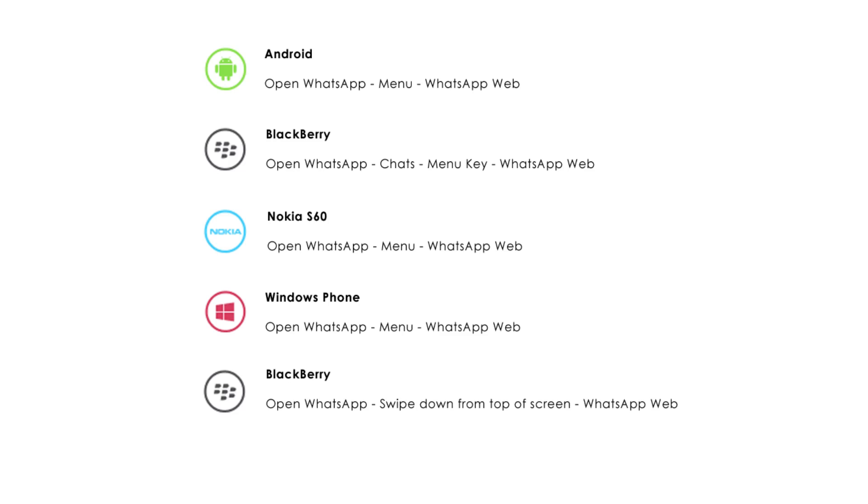Here are the instructions to get the web client on different mobile platforms. You have now paired WhatsApp on your phone with a WhatsApp web client. Your phone needs to stay connected to the internet for the WhatsApp web client to work. Please make sure to install the latest version of WhatsApp on your phone.